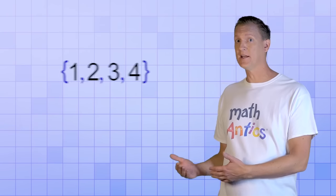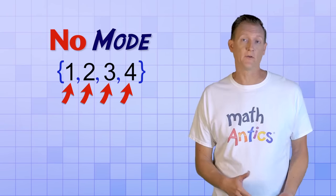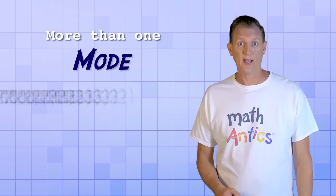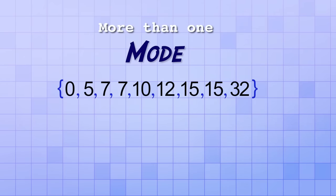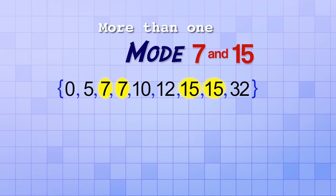As I mentioned, if each member in a dataset occurs only once, it has no mode. But it's also possible for a dataset to have more than one mode. Here's an example of a dataset like that. In this set, the number 7 is repeated twice, but so is the number 15. That means they tie for the title of the mode. This set has two modes, 7 and 15.